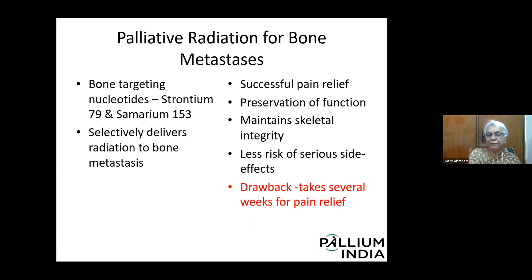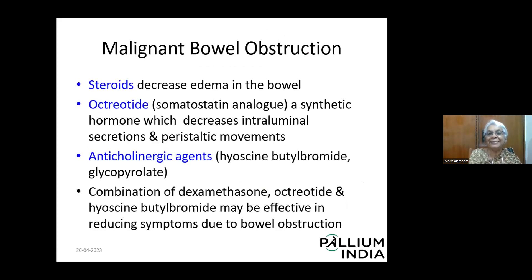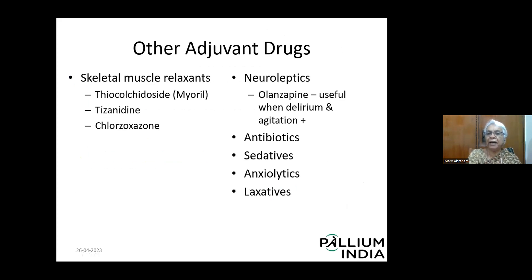For malignant bowel obstruction, palliative radiation is an option, along with steroids, octreotide (a somatostatin analogue that decreases intraluminal secretions and peristalsis), and anticholinergic drugs like hyoscine butylbromide or glycopyrrolate, or combinations. Other adjuvant drugs include skeletal muscle relaxants, neuroleptics (particularly olanzapine when there is delirium and agitation), antibiotics for infection, sedatives, anxiolytics, and laxatives.